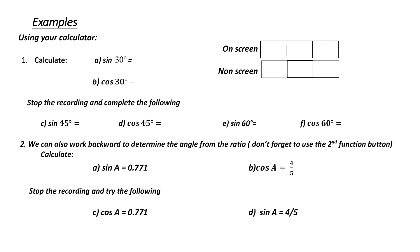Let's practice this using our calculators. First, sine of 30 degrees — we want to find the ratio here. Remember that we would punch in the ratio, in this case sine, then we would punch in the angle, which would be 30 degrees, and then equals. This is for an on-screen calculator. If you have a non-screen, you have to reverse the ratio and the number — you would push 30 and then sine.